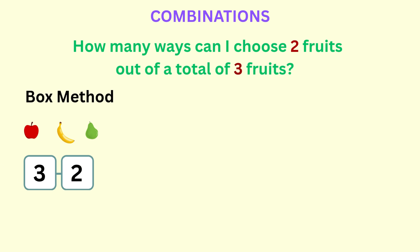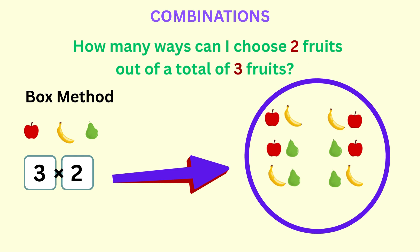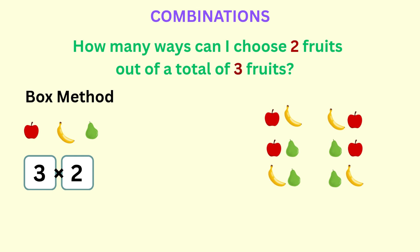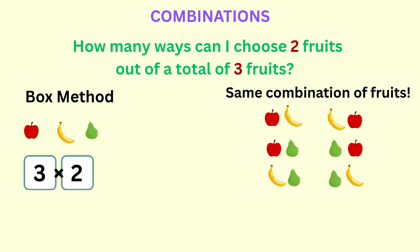A critical thing you need to understand about this method is that multiplying the numbers in the boxes will give you all the possible arrangements of the two items that you are choosing, in every possible order, as is shown here — a total of six possible arrangements. However, this is double counting, since, for example, apple and banana is the same as banana and apple. In other words, the order is not important, since Zuri's only concern is that she has a combination of two fruits in her bag.